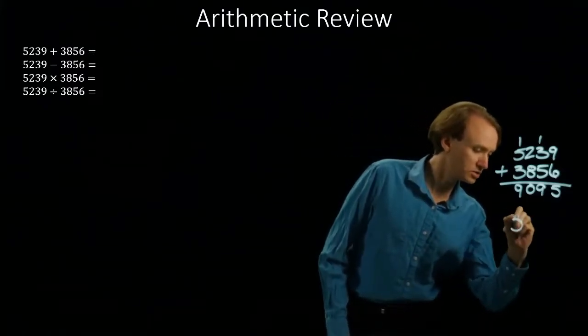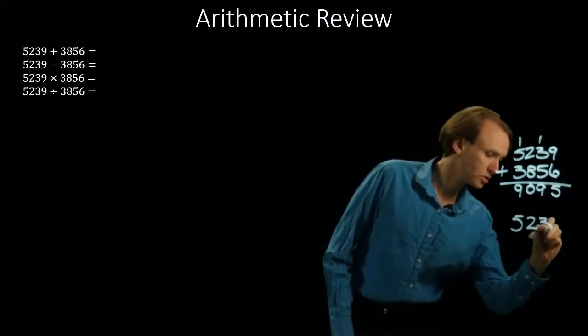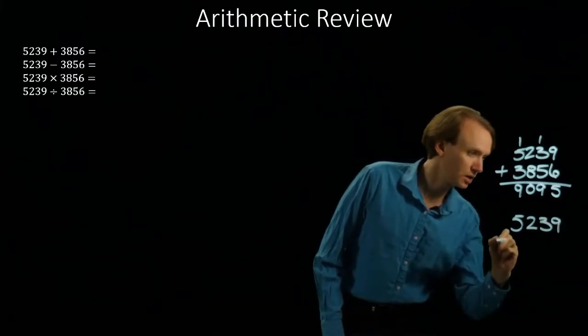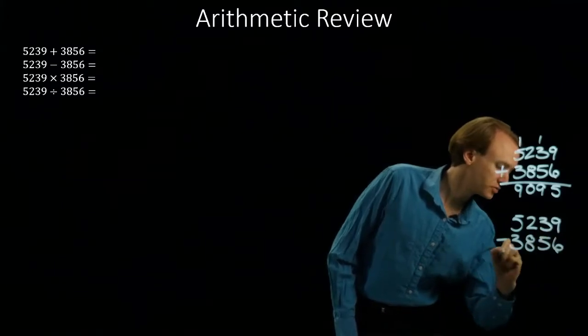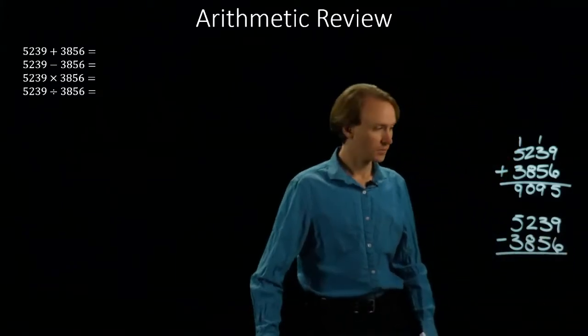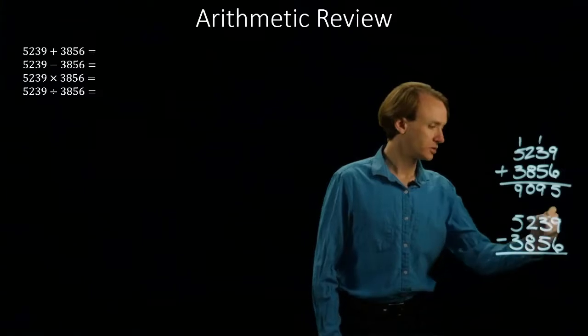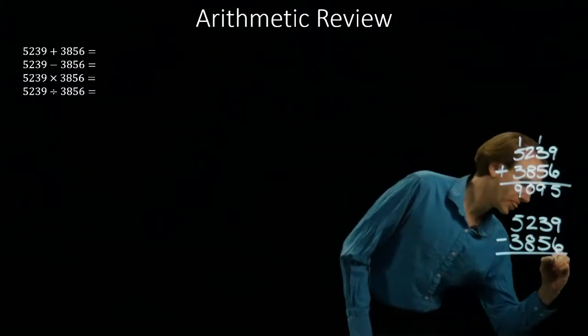If I do subtraction, I'll start with the 5239, and I'm going to subtract 3856 from that. So 9 minus 6 is simple. That gives me 3.